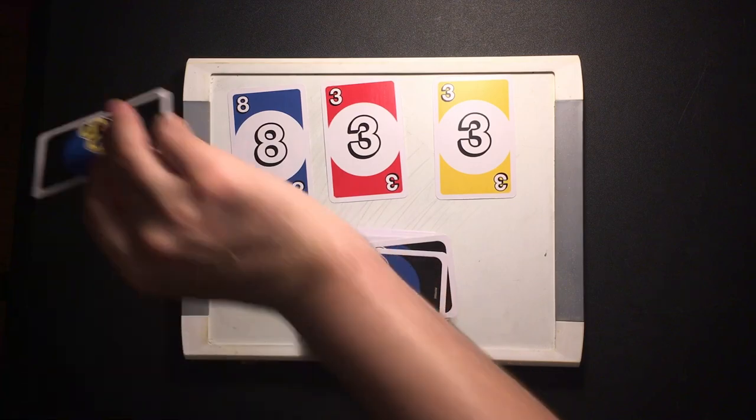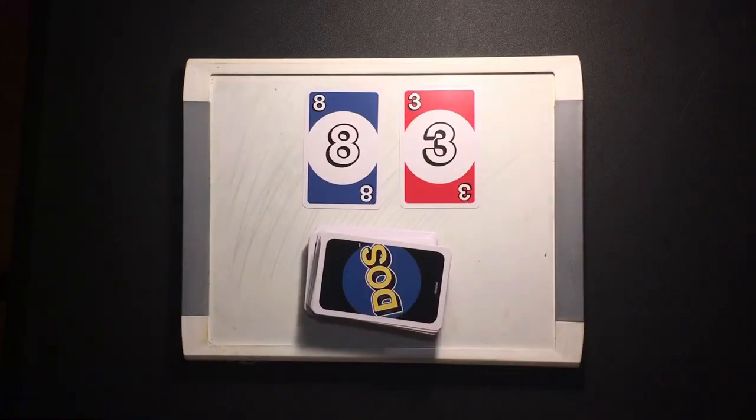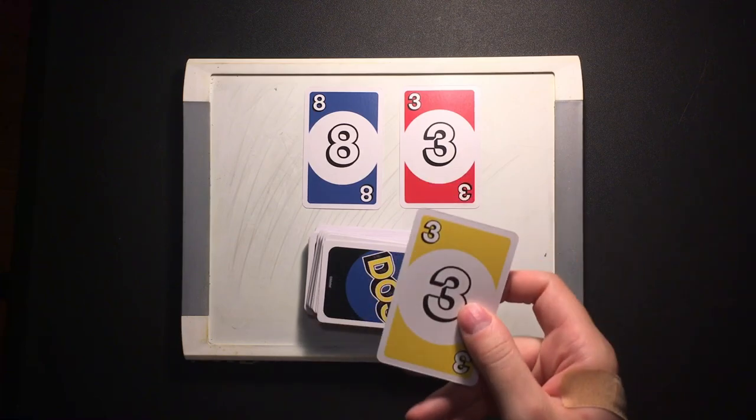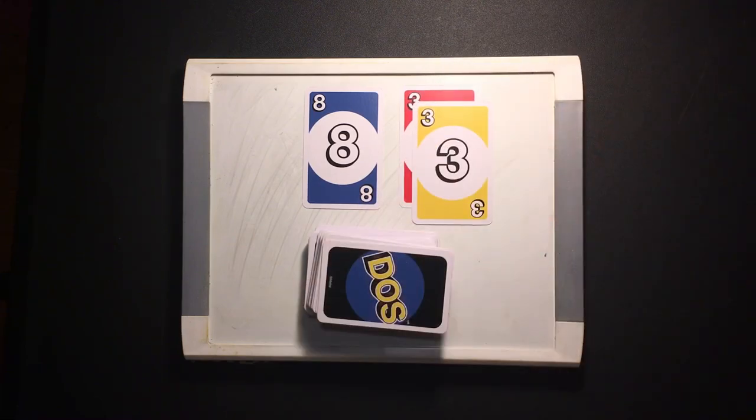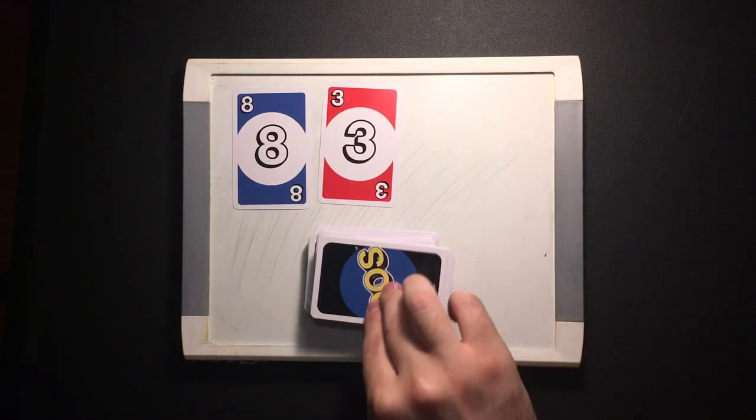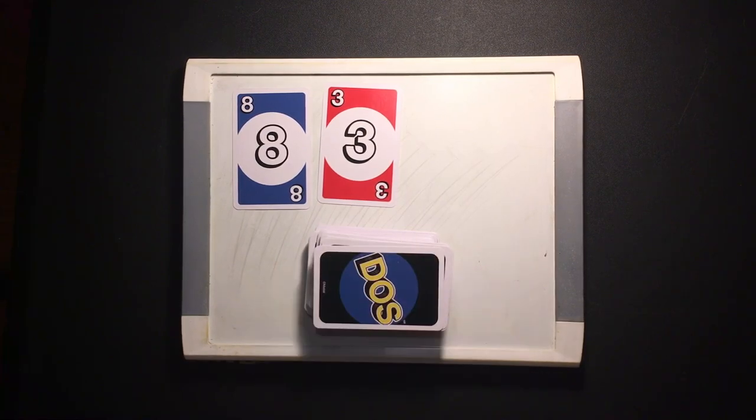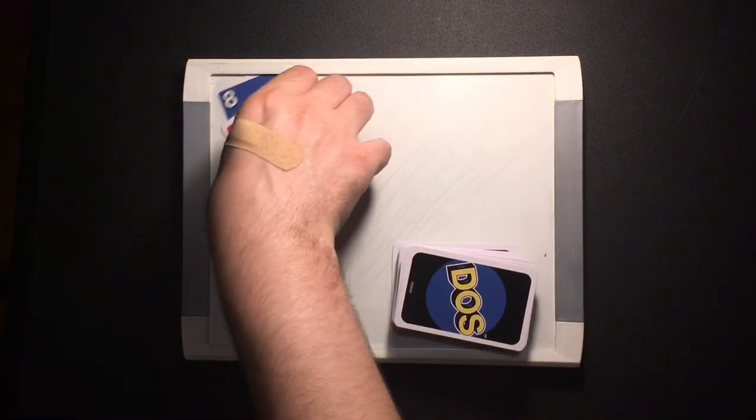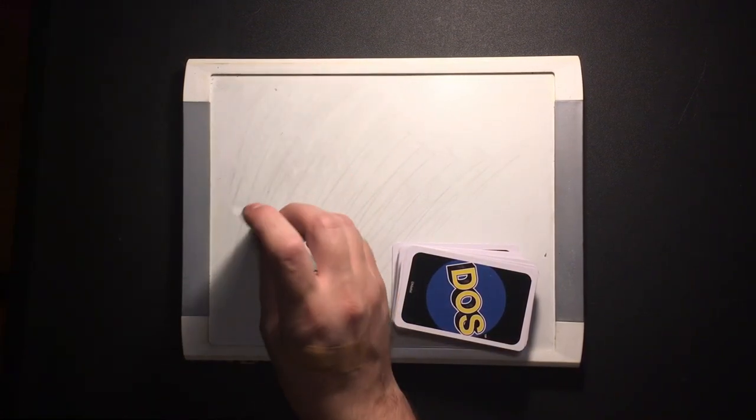If you decide you don't want to make a match, you must draw. If you can make a match with the card you draw, you may immediately do so. If you cannot or do not want to make a match after drawing, you must lay one card from your hand in the center row.